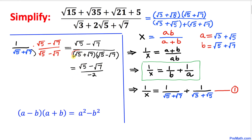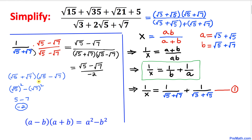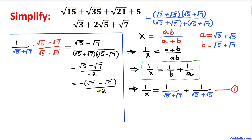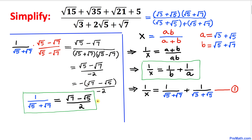We can also simplify the denominator using the difference of two squares formula: (a + b)(a − b) = a² − b². Applying it here gives (square root of 5)² minus (square root of 7)² = 5 minus 7 = negative 2. Factoring out the negative sign, we switch to (square root of 7 minus square root of 5) over negative 2; the two negatives cancel, giving the rationalized form: (square root of 7 minus square root of 5) divided by 2.